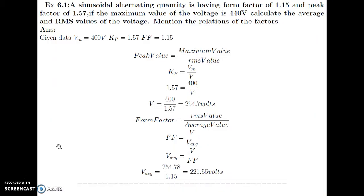Let us see some numerical based on AC fundamentals. In the first example, a sinusoidal alternating voltage has a form factor of 1.15 and a peak factor of 1.57. If the maximum value of the voltage is 440 Volts, calculate the average and RMS value of the voltage, and mention the relationship of the factors.